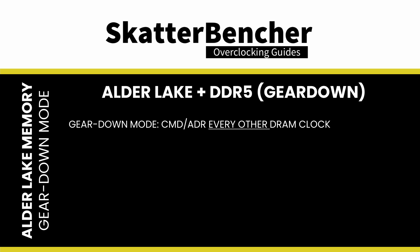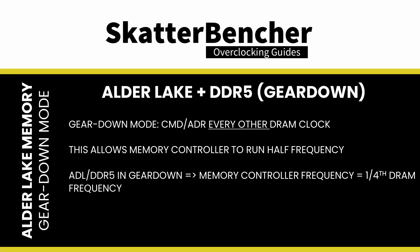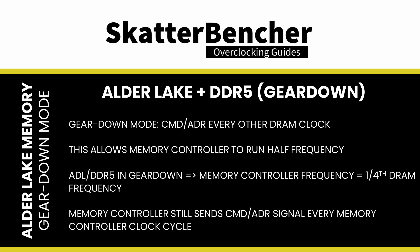Memory Gear Down mode specifically means that a command address signal is sent every other memory clock cycle, which allows the memory controller frequency to operate at half the usual rate. For Alder Lake and DDR5, when Gear Down mode is enabled, the memory controller will operate at a quarter of the memory frequency. Note that from the perspective of the memory controller, a command is still sent every clock cycle. At the end of the day, the point of Gear Down mode is that you can run higher memory frequency by reducing the memory controller frequency.